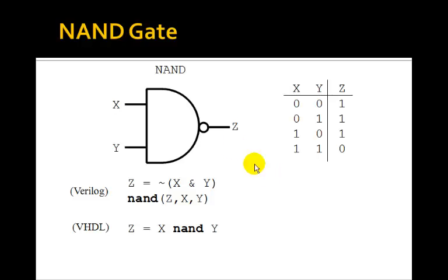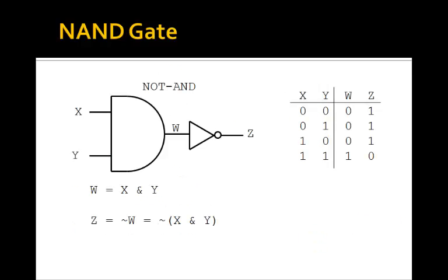Here's the symbol for a NAND gate. It looks like an AND gate with this bubble at the output. The bubble indicates a NOT operation. So a NAND is just a NOT AND. Notice that the output is 0 if both inputs are 1, and it's 1 if any of the inputs are 0 — so it's just NOT of X AND Y. There's a NAND function in Verilog whose output Z and inputs X and Y are given as parameters. In VHDL, you write out the word NAND.